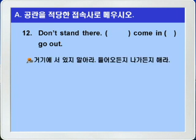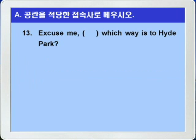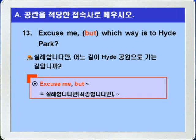12번입니다. Don't stand there, blank, come in, blank, go out. 거기에 서 있지 마라. 들어오든지, 나가든지 해라. 정답은 'either'와 'or'를 쓰면 되겠습니다. either A or B는 'A나 B 둘 중에 하나'라는 양자택일의 의미를 갖죠. 정답: don't stand there, either come in or go out. 13번입니다. Excuse me, blank, which way is to Hyde Park? 정답은 'but'을 쓰면 되겠습니다. 'excuse me but'은 '실례합니다만'의 표현입니다. 정답: excuse me but which way is to Hyde Park?